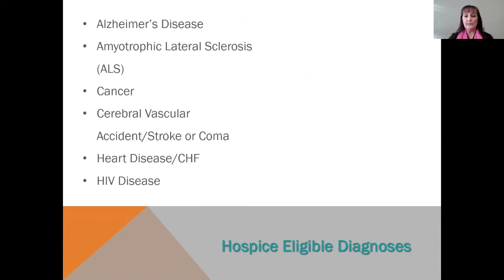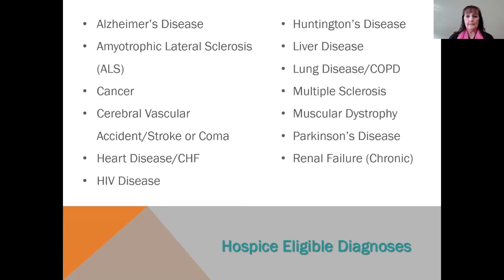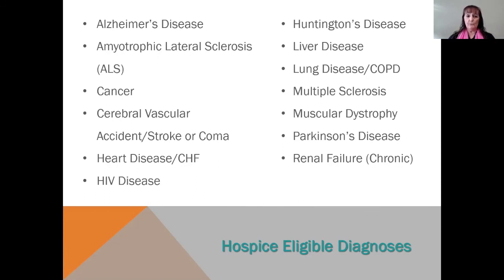Some diagnoses that can qualify for hospice eligibility include: Alzheimer's, ALS, cancer, cerebrovascular accidents such as stroke or coma, heart disease, congestive heart failure, HIV disease, Huntington's disease, liver disease, lung disease, COPD, multiple sclerosis, muscular dystrophy, Parkinson's disease, and chronic renal failure. As these diseases progress past the point where treatment is no longer effective, and patients want quality of life and comfort, that's when hospice becomes the appropriate choice.